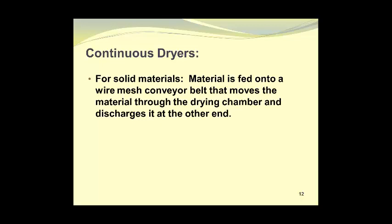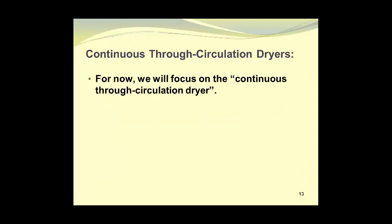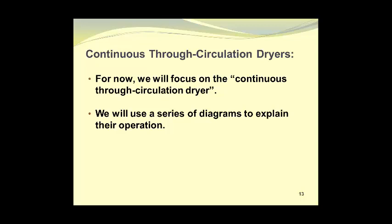Now let's take a look at continuous dryers. For solid materials, the material is fed onto a wire mesh conveyor belt that moves the material through the drying chamber and discharges it at the other end. For slurries or solutions, material is pumped into the drying chamber through a spray nozzle assembly into hot air and is separated from the hot air stream that conveys it. For now, we will focus on the continuous through-circulation dryer, using a series of diagrams to explain their operation.